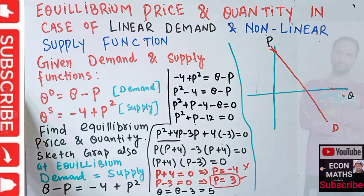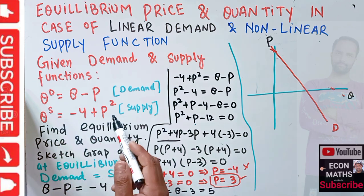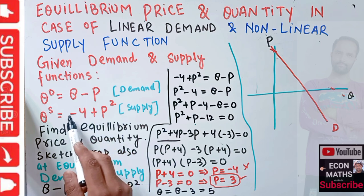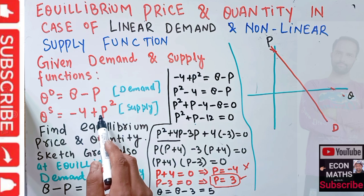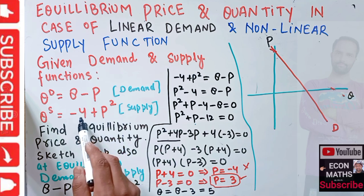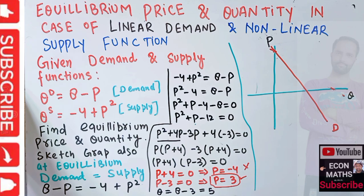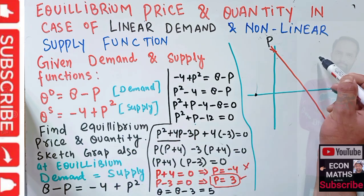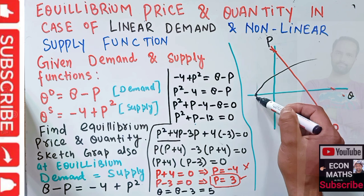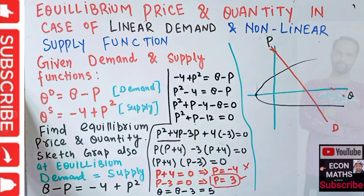For the supply function, when Q = 0, P = -4, so the intercept is at -4 on the price axis. Since it is a quadratic function, the supply curve is nonlinear and curves upward from that point.